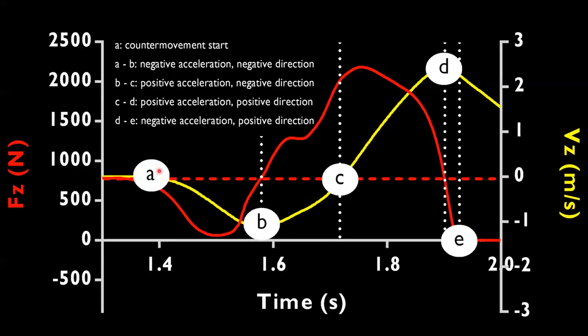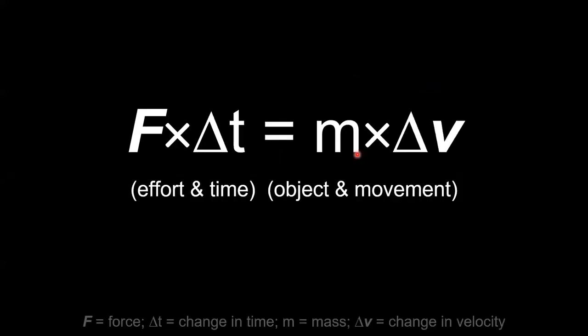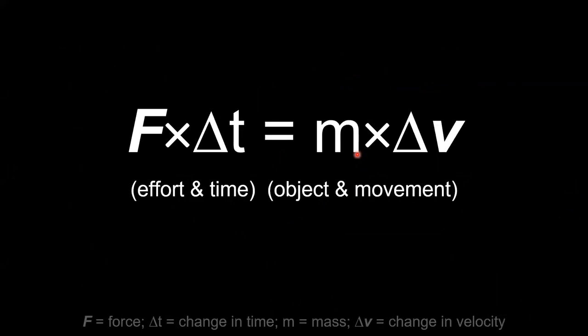Any area under the force-time curve—here for example—that's the impulse. It's how hard the athlete has pushed against the ground and how long they've pushed or pulled for. We can think of impulse as the effort we apply and the time we exert it over, which will be directly proportional to how quickly and the direction that we'll move in. Impulse-momentum, really simple stuff.